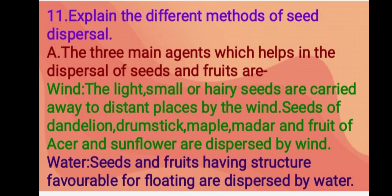Next question: explain the different methods of seed dispersal. The three main agents that help in the dispersal of seeds and fruits are: wind — light, small, or hairy seeds are carried away to distant places by the wind. Seeds of dandelion, drumstick, maple, madar, and fruits of acer and sunflower are dispersed by wind.